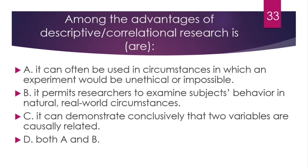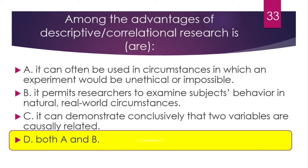Question number 33. Among the advantages of descriptive or correlational research is — the correct answer is B — both A and B. Descriptive or correlational research can be used in circumstances where experimentation would be unethical or impossible, and it allows examination of subjects' behavior in natural or real-world circumstances. However, it cannot establish causal relationships — that requires experimental methods.